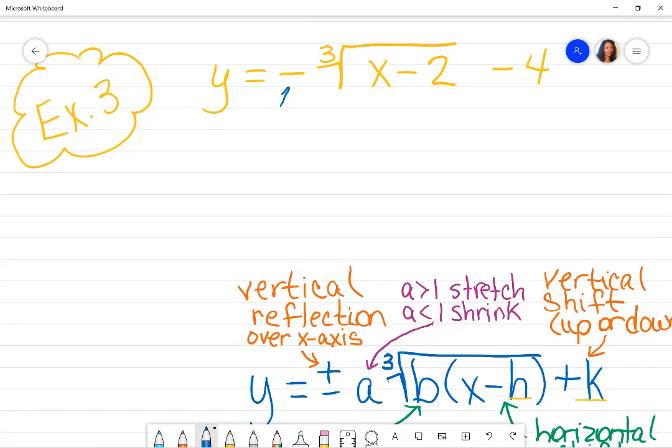So there is a negative here. The negative goes with what's in front of A. So that tells me that I am going to have a vertical reflection. And again, be specific because what is it reflecting over? The X axis.